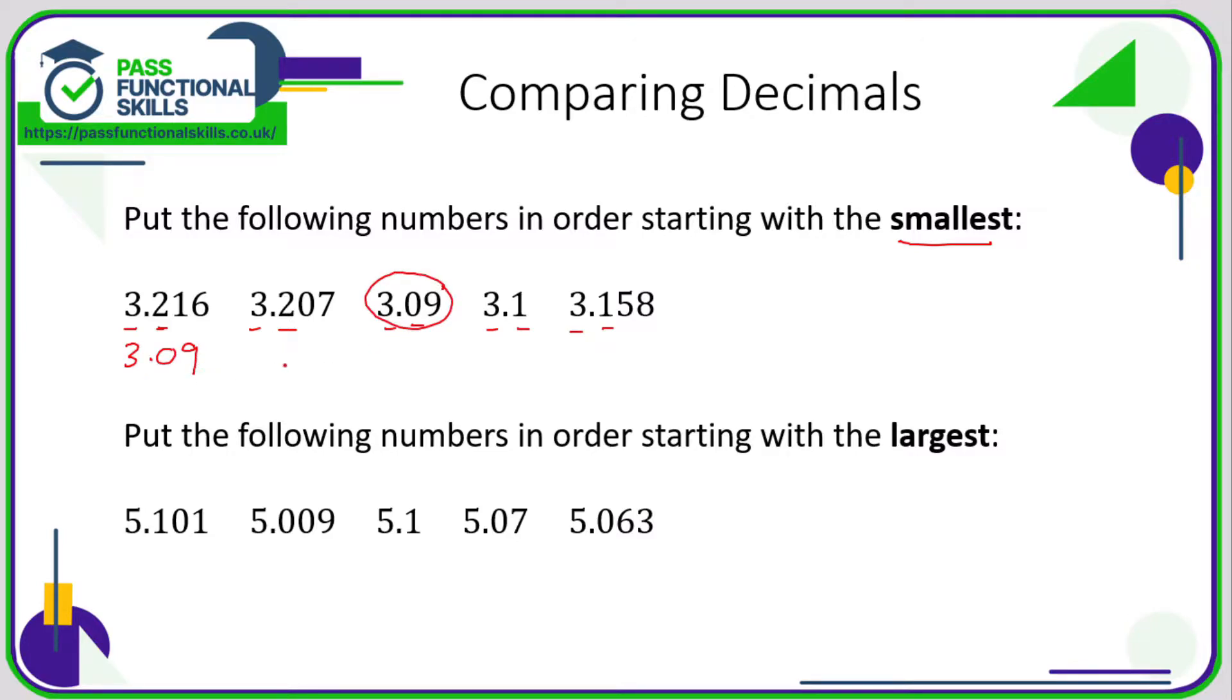So that one's been eliminated. Now we're going back and still looking at the tenths column: two, two, one, and one. So one is less than two, so one of these numbers is smaller than the other.